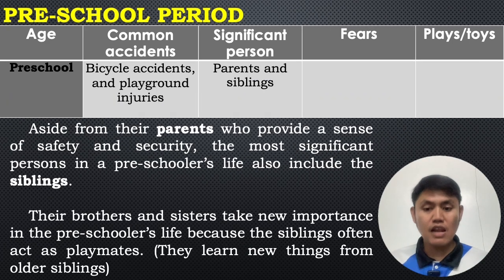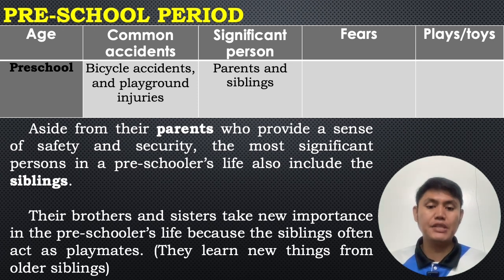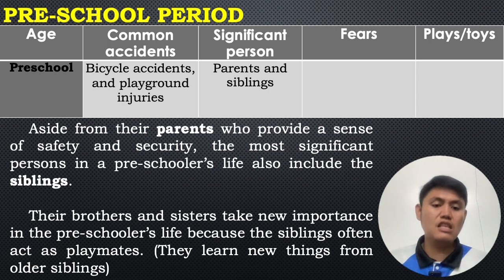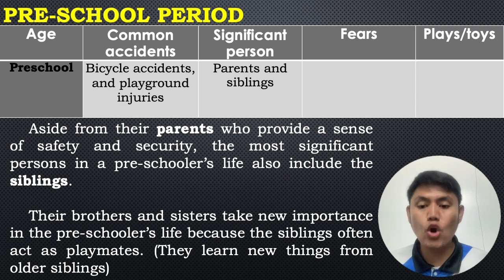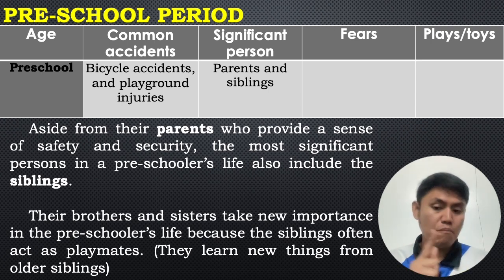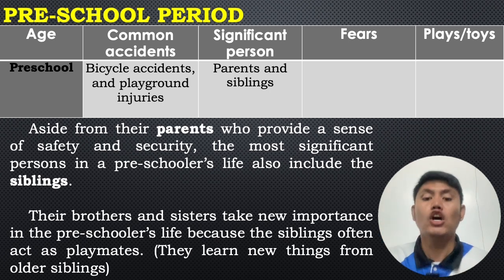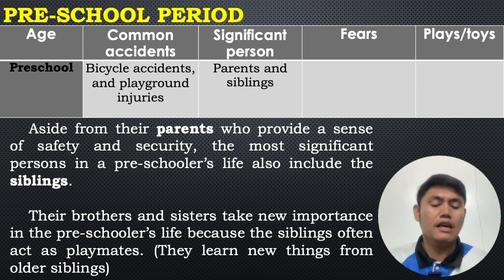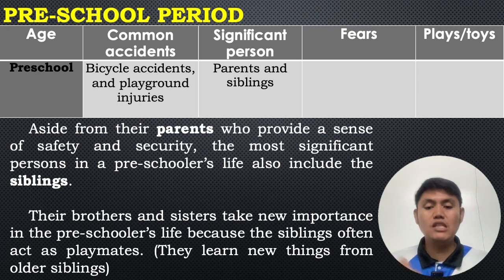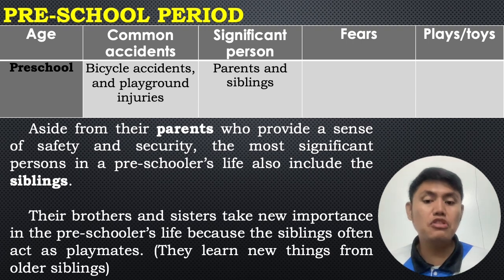The significant persons in the life of the preschooler include the parents and their siblings. Aside from their parents who provide safety and security, the siblings are often the first playmates of the child. Preschoolers learn new things from their older siblings, so brothers and sisters take on new importance in the preschooler's life. Therefore, the significant persons for preschoolers include both parents and their siblings.